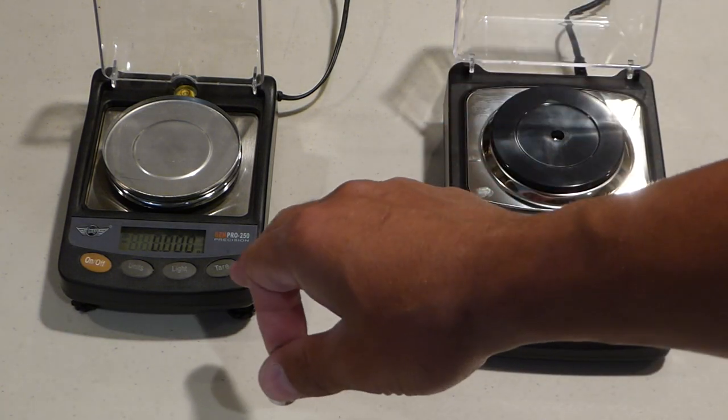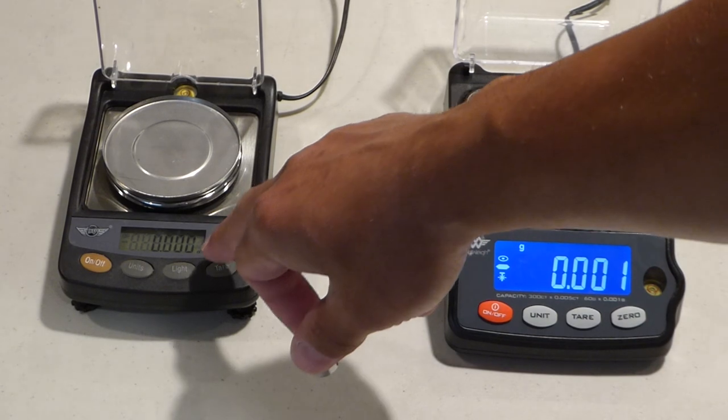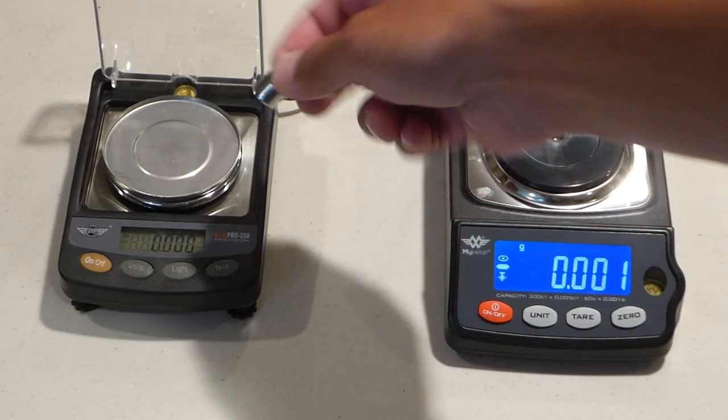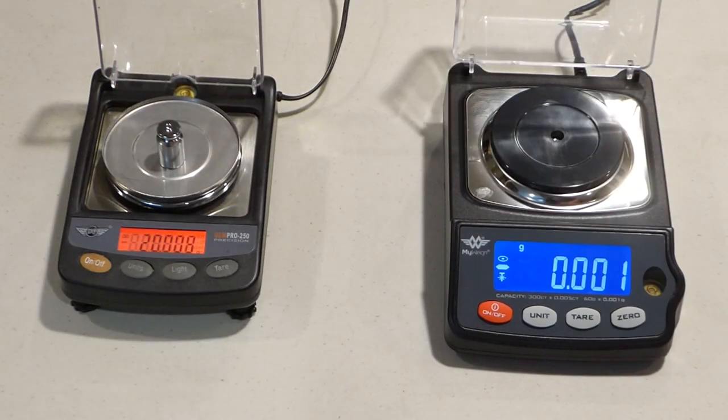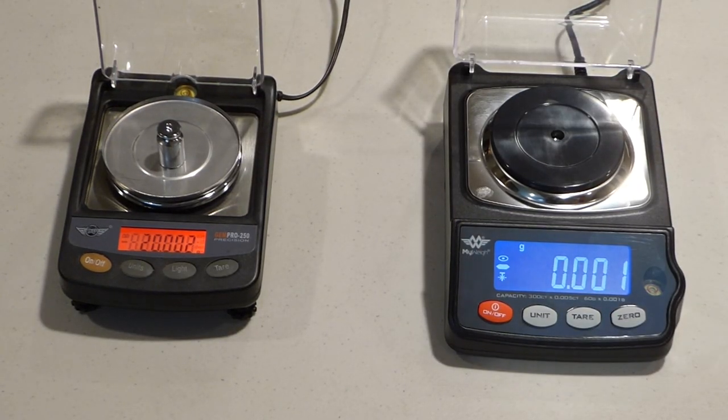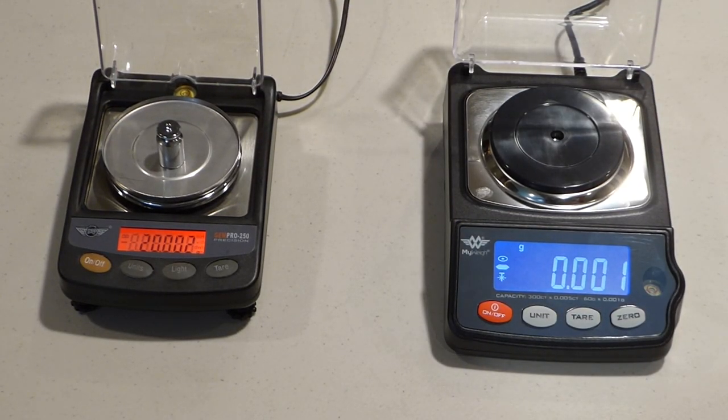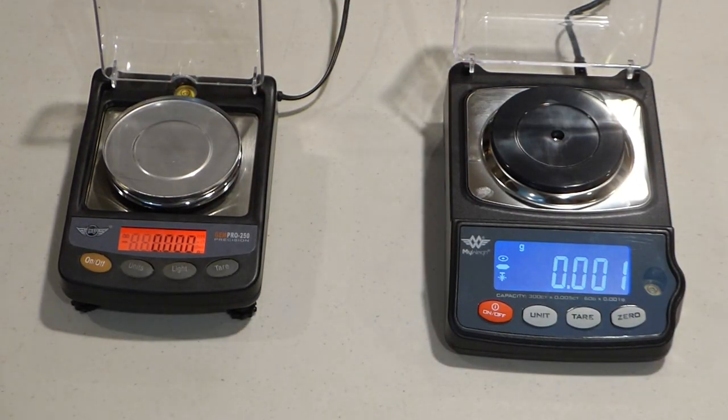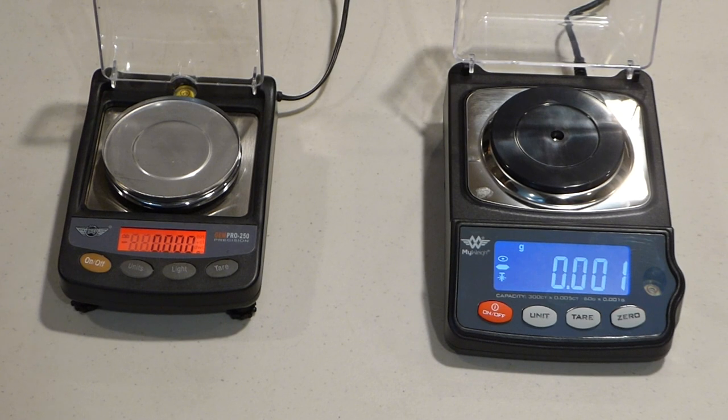On the old GEMPRO 250, there's a little unit symbol. So in this case, we're in grams, so we got a G. And when you put an object on it, that will start blinking and then once it stops blinking, that tells you it's locked on. So here's what I'm going to show you right now. I want to eliminate that little myth that everybody is seeing on the internet.